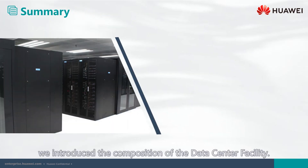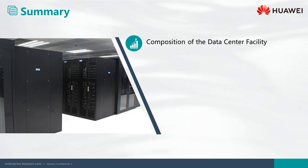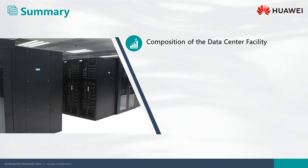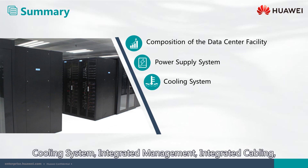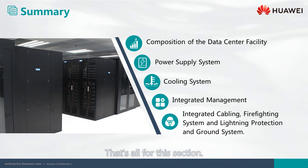In this chapter, we introduced the composition of the data center facility. A data center is composed of eight subsystems. We explained the power supply system, cooling system, integrated management, integrated cabling, firefighting system, and lightning protection and grounding system. That's all for this section.